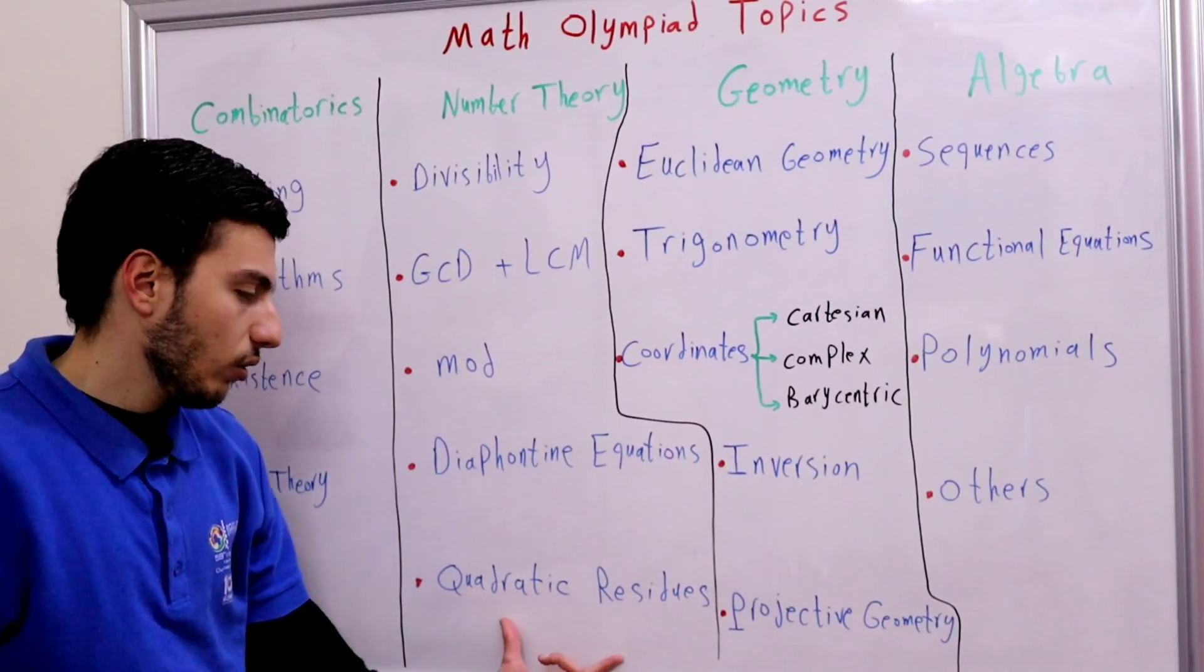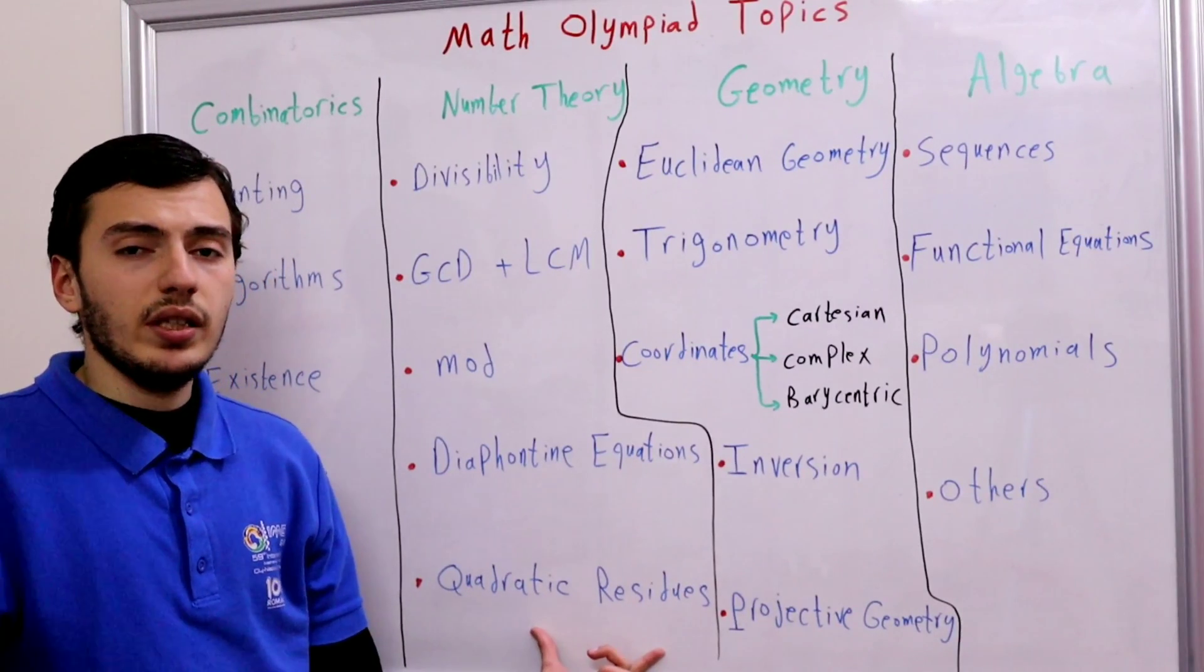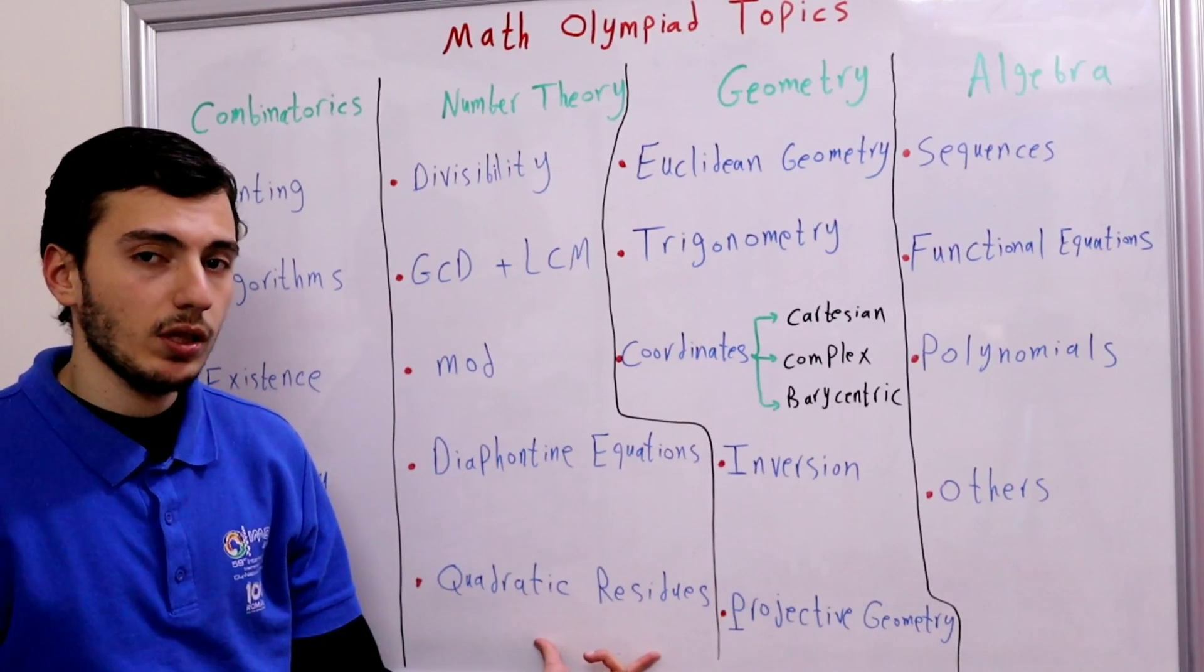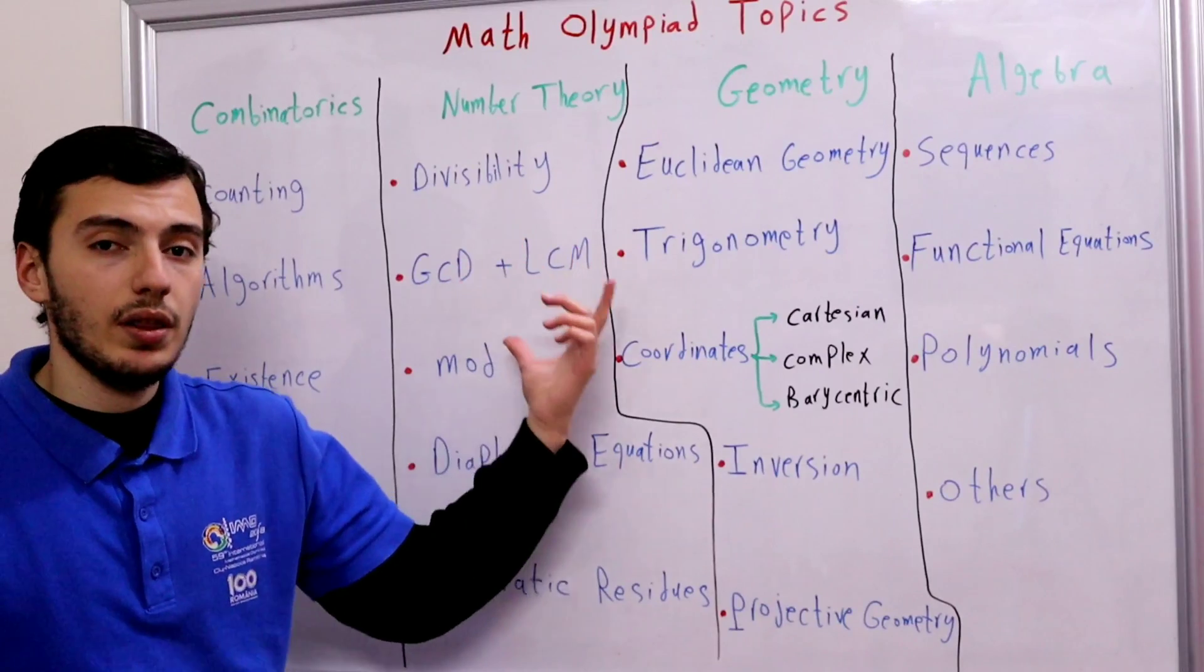And the last one is quadratic residues. It is less important but is quite useful in solving some NT problems. That is all about number theory.